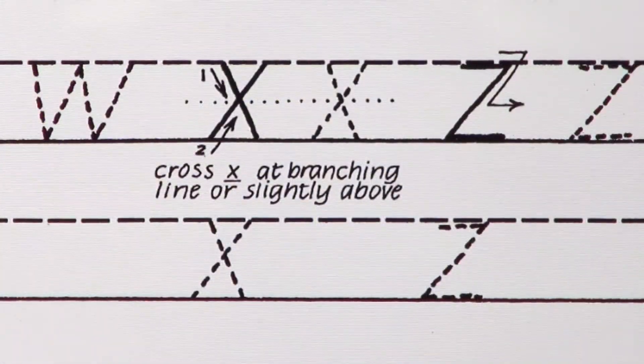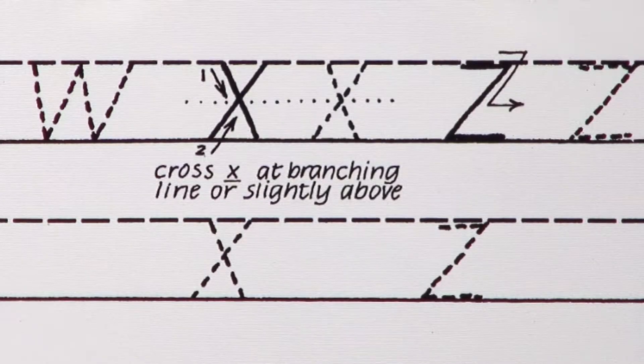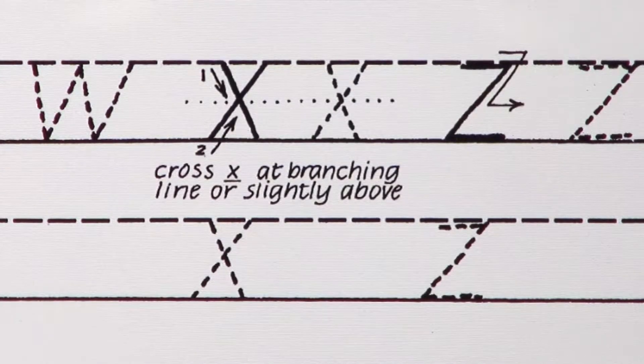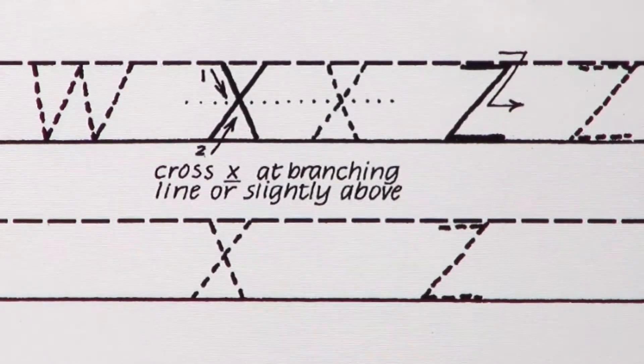Your handwriting can go places. Today's letter is the letter X. X belongs in family 2, which includes K, V, W, and Z. These are lowercase letters that utilize diagonal strokes.